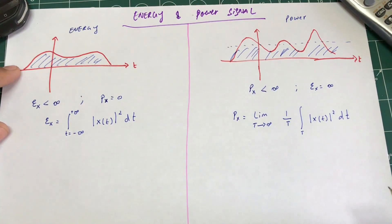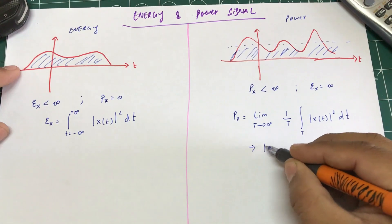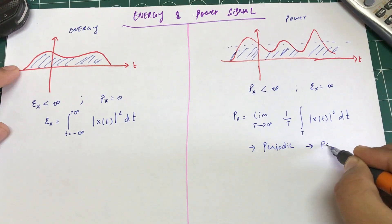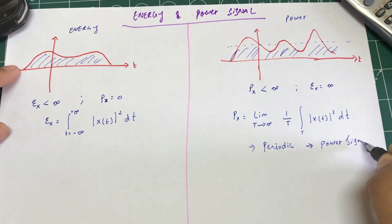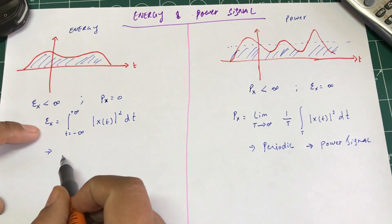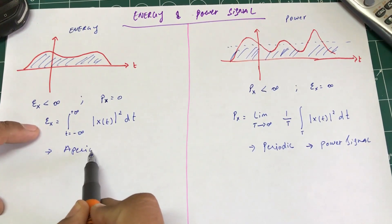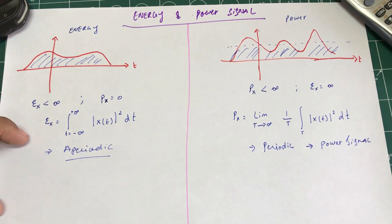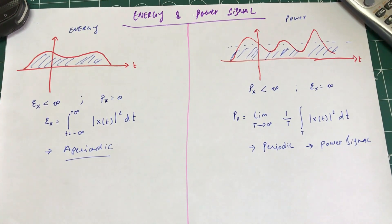Examples of a power signal include any periodic signal. Periodic signals are considered power signals. For instance, sending digital bits — you have a high burst when you have data to send, and nothing when you don't — or a periodic exponential signal.